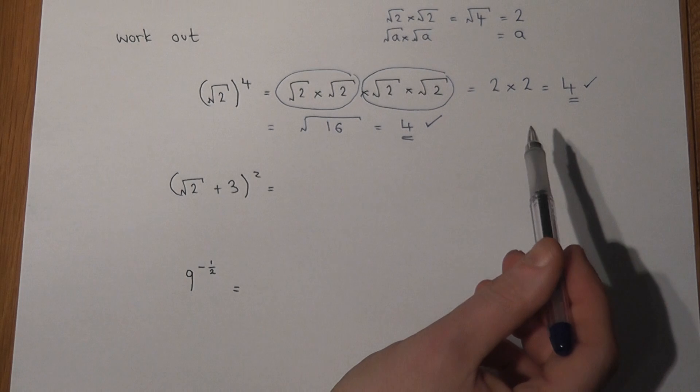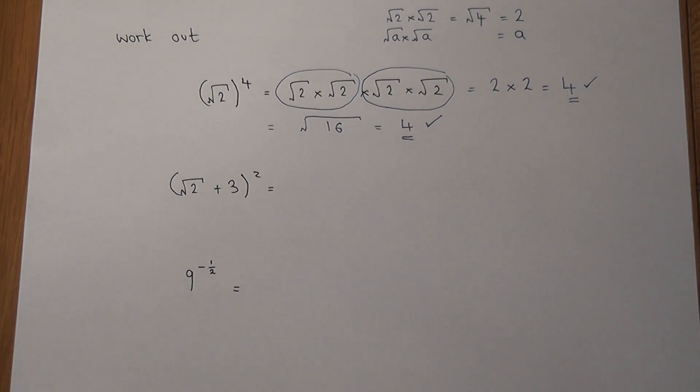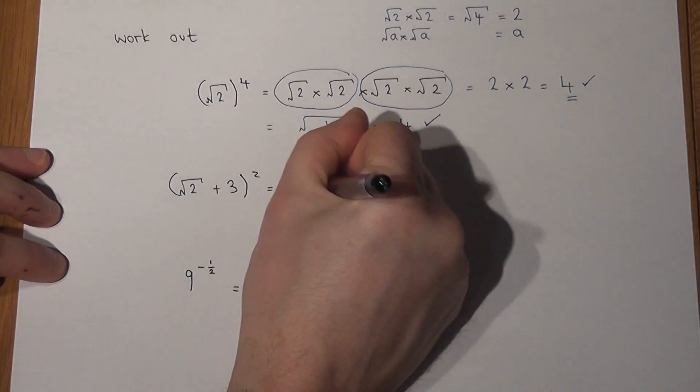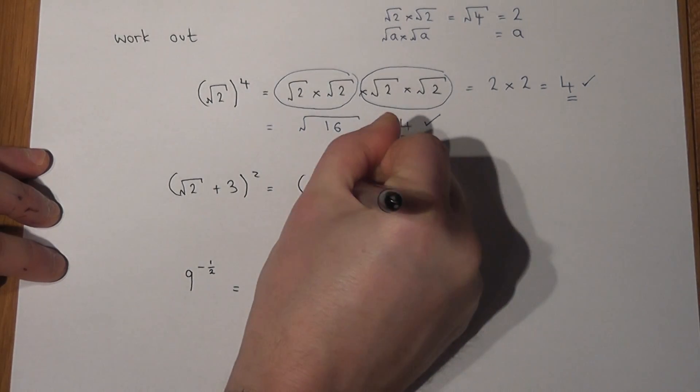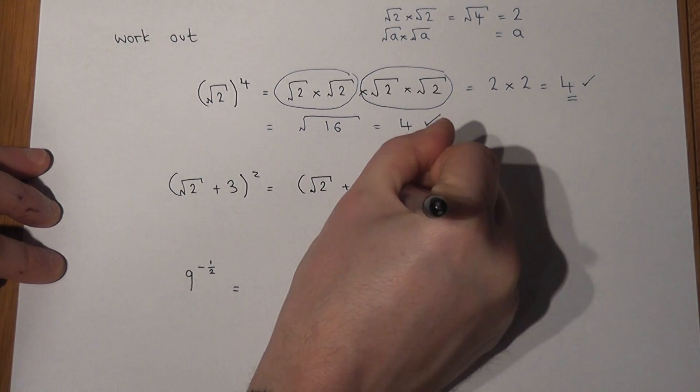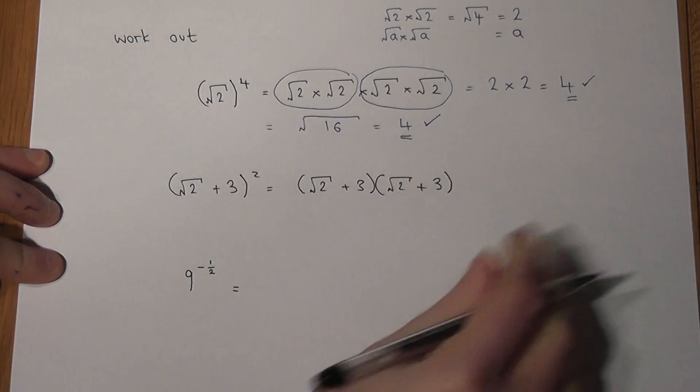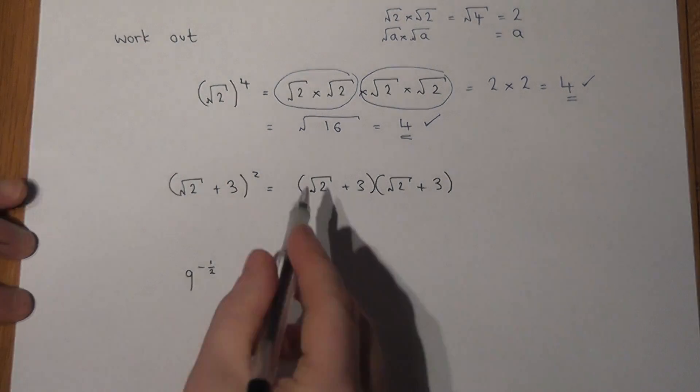Now in the second example, which we will approach in the same way, we've got a bracket to the power of 2, which I can write as root 2 plus 3, bracket root 2 plus 3. And again, it helps to write things out longhand.